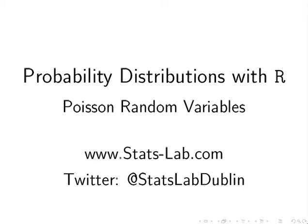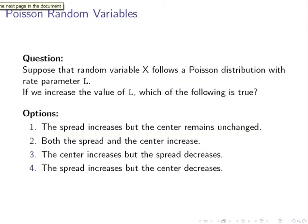In this presentation, we are going to look at the Poisson random variable. The question here is: Suppose that a random variable X follows a Poisson distribution with a rate parameter L, and if we increase the value of L, which of the following is true? We have four options here.